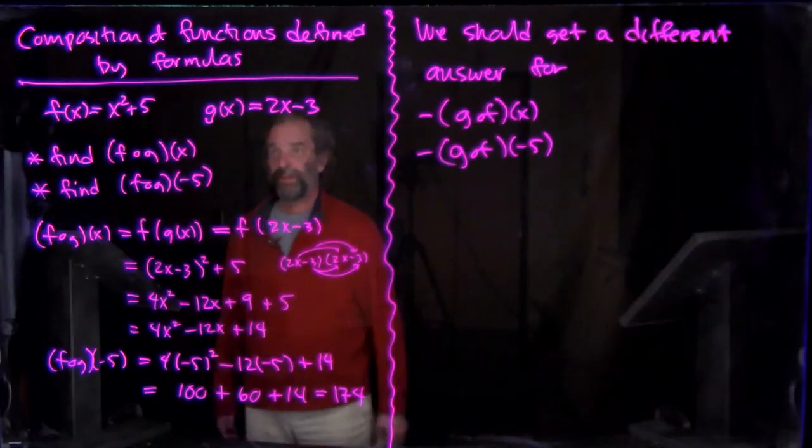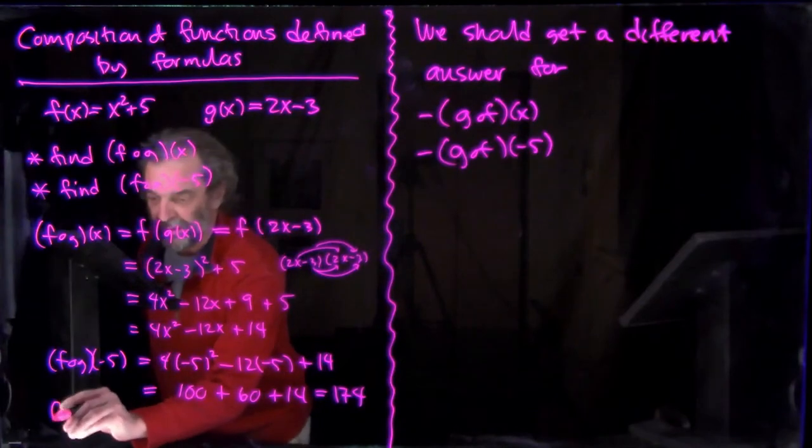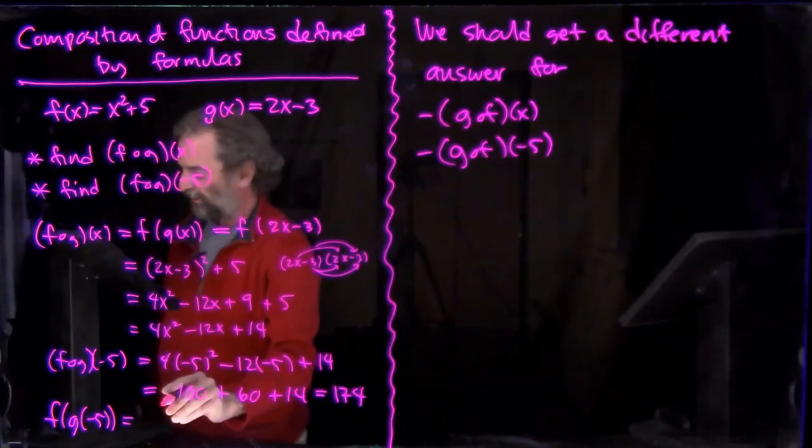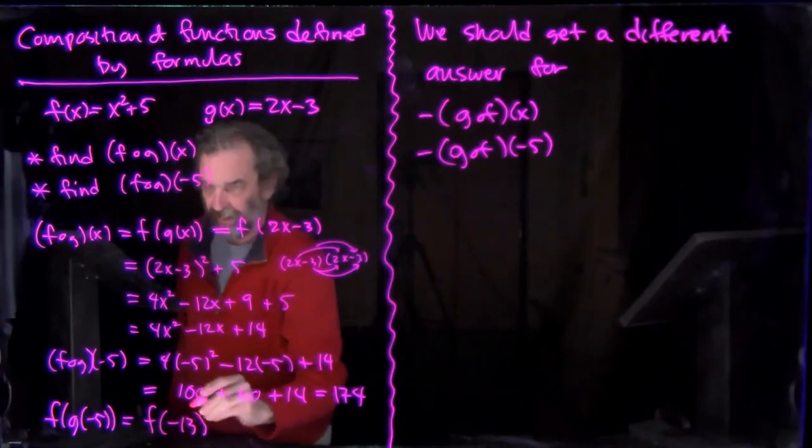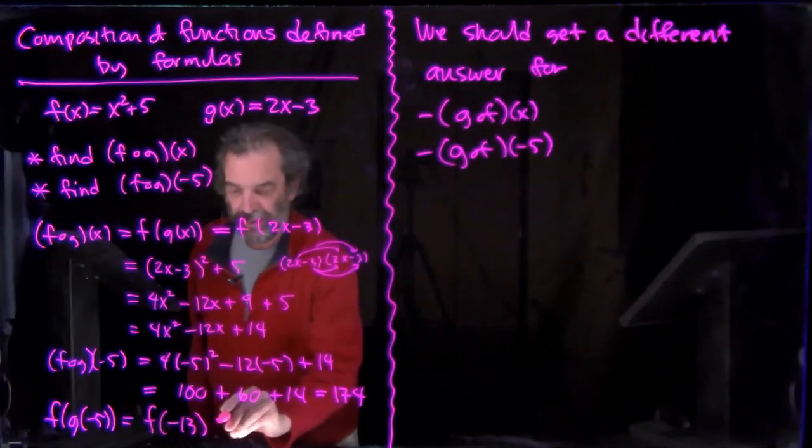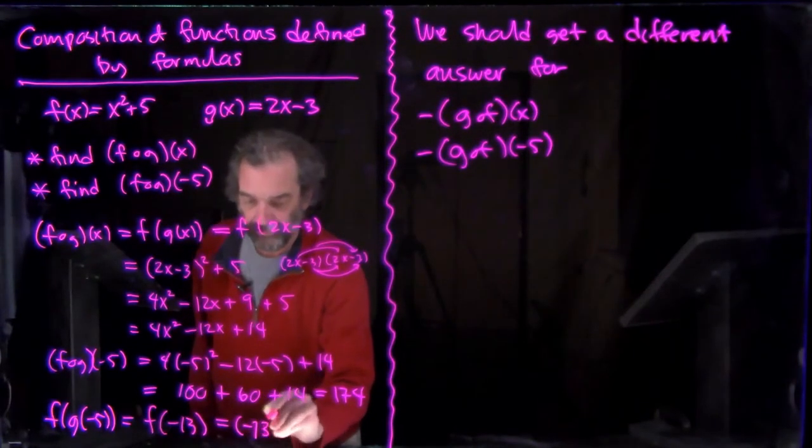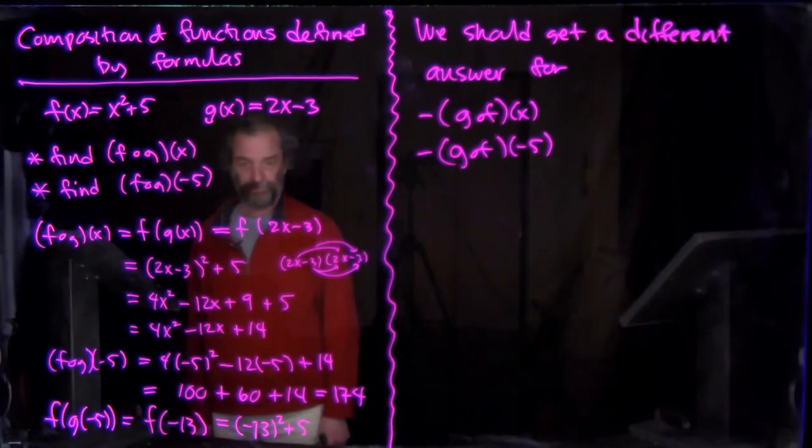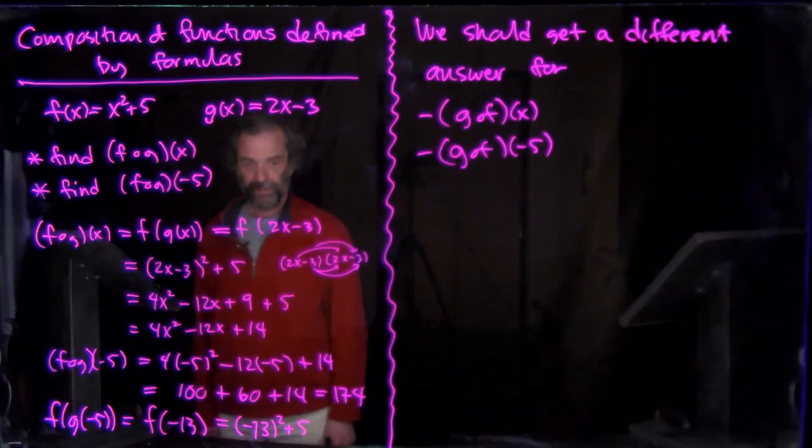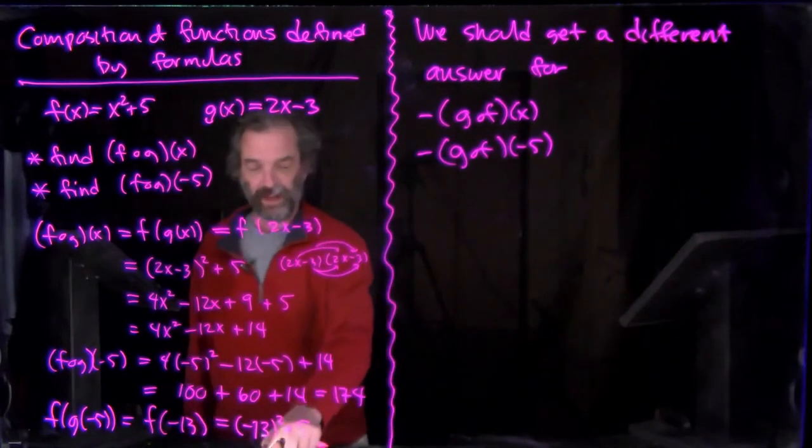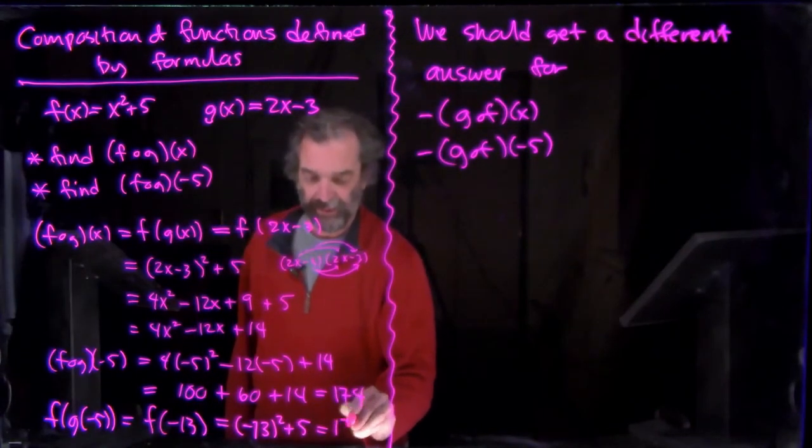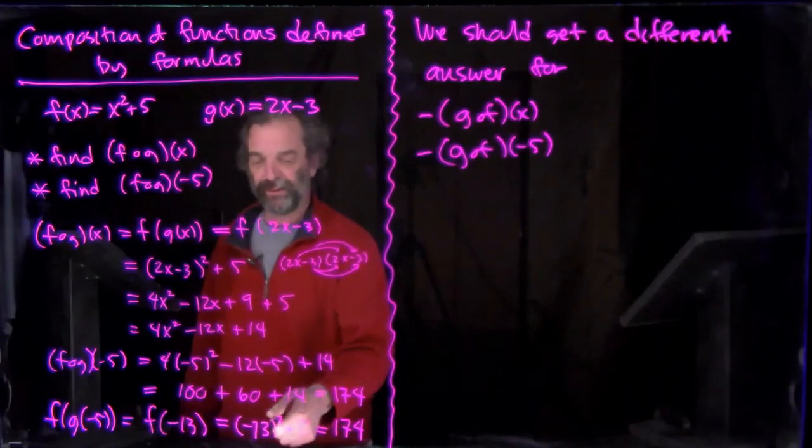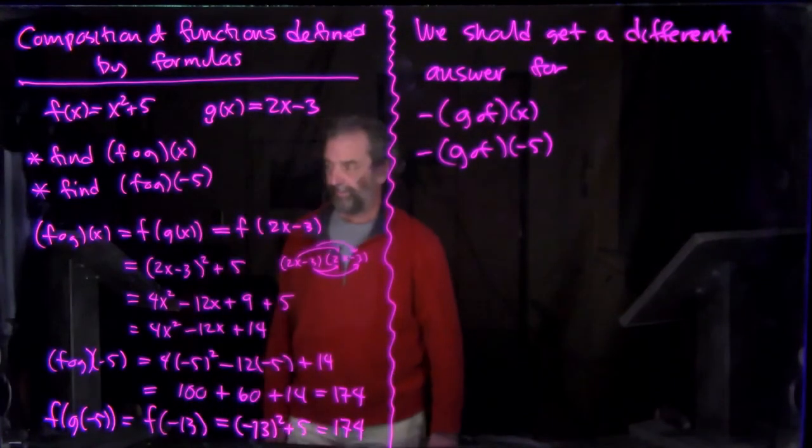Now you wouldn't have to find the formula to find f composed with g at -5. You can just do it directly. f(g(-5)). g(-5) is -13. Yes. And I have to give that to f. f is going to square it and add 5. So 13 squared is 169. And 169 plus 5 is 174. I was worried about that minus sign for a minute. I thought it was -169, but it's -13 squared. It's 169 plus 5 is 174. So all is good.